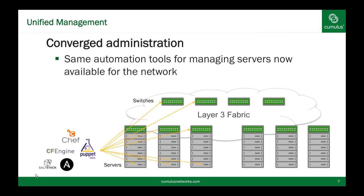One of the things Cumulus Linux brings, being built directly on top of Linux, is complete converged administration between your server fleet of Linux servers and the Cumulus Linux software running on top of the open switches. This allows you to leverage your existing automation schema — be it Chef, Puppet, Ansible, or Salt — and extend that into provisioning both the servers in your big data fleet and the network components. Part of the demo we'll show in a few moments is how you can do this with Ansible on our workbench and leverage one tool to set up the entirety of your cluster network.